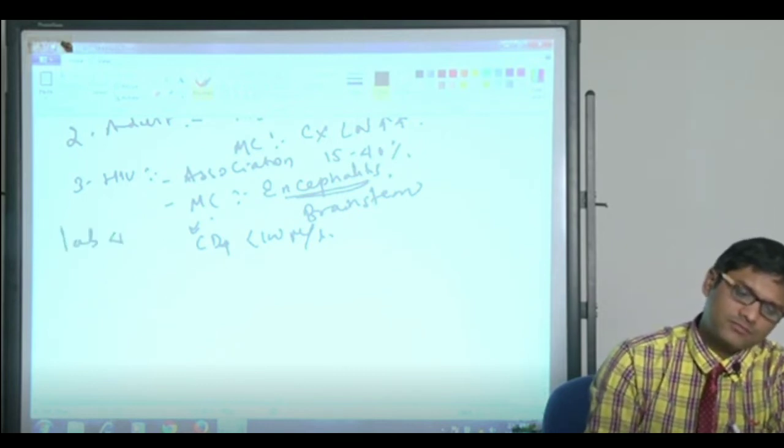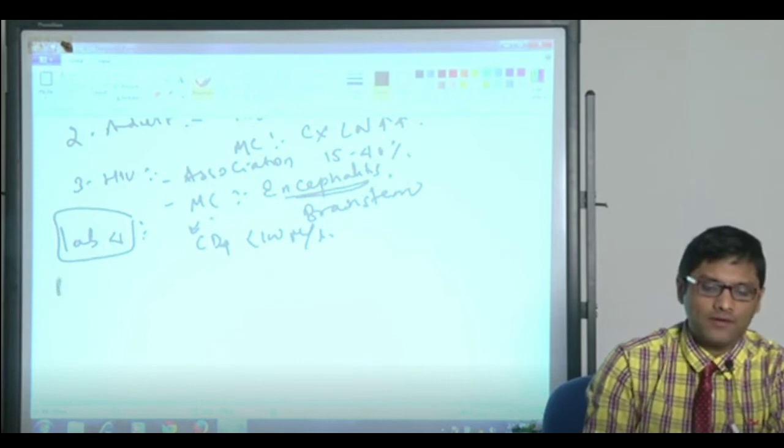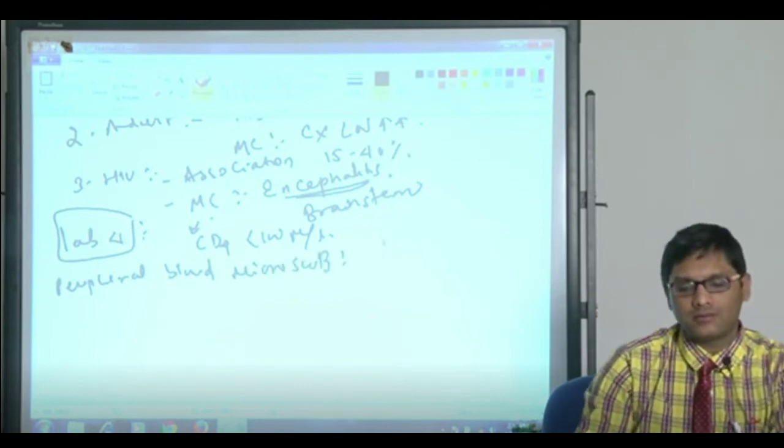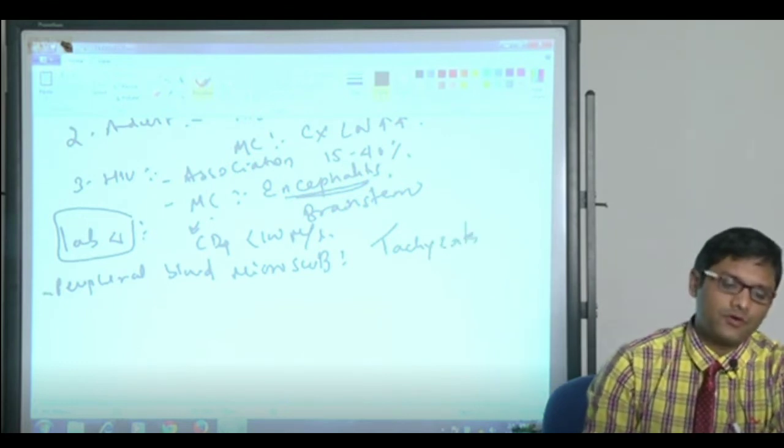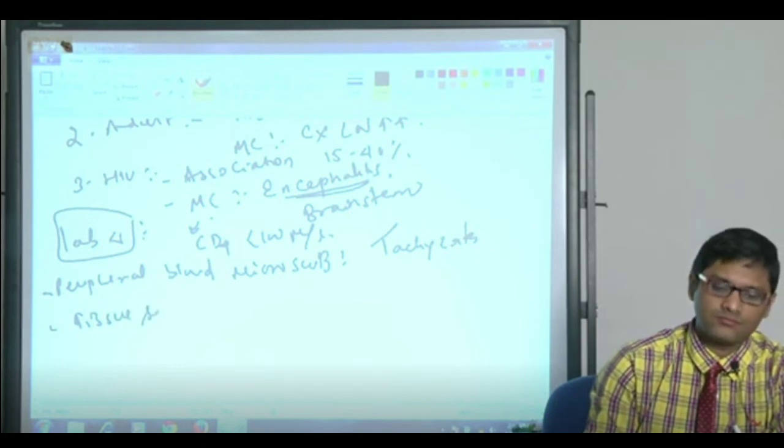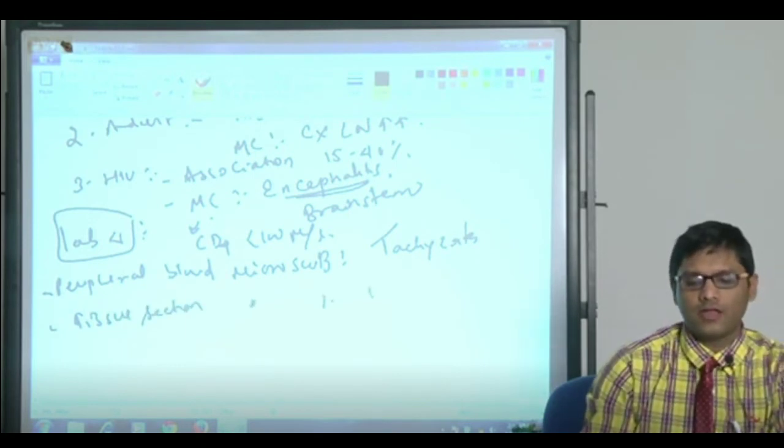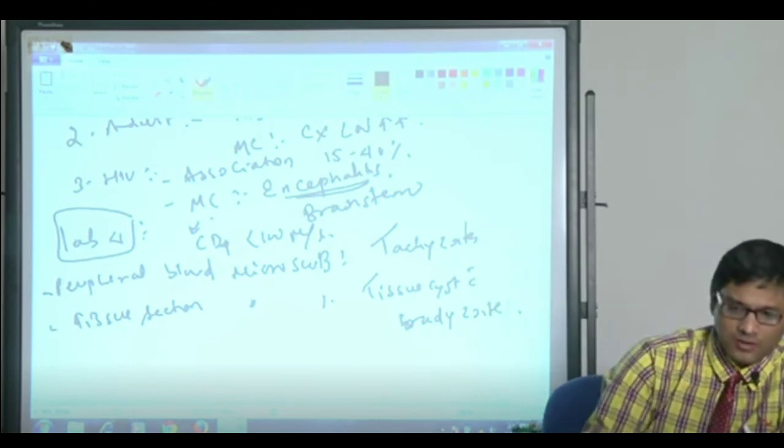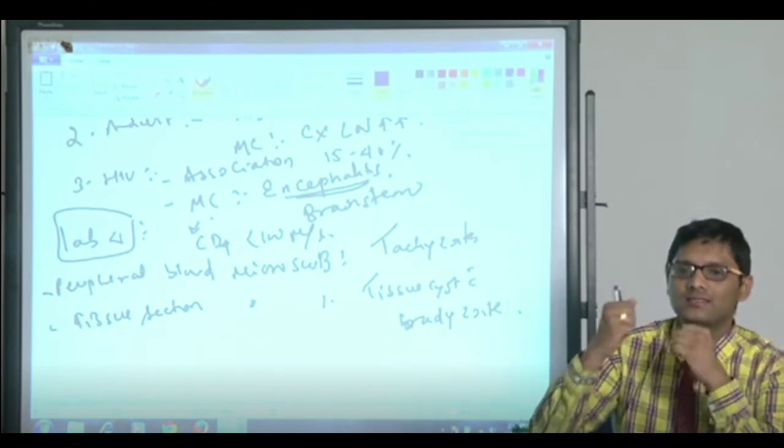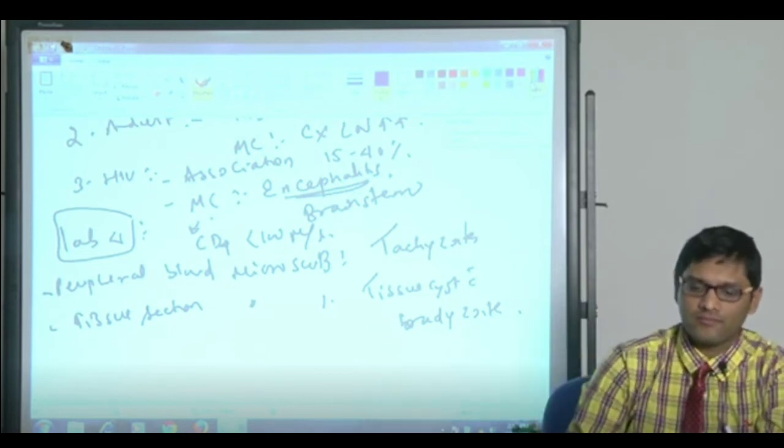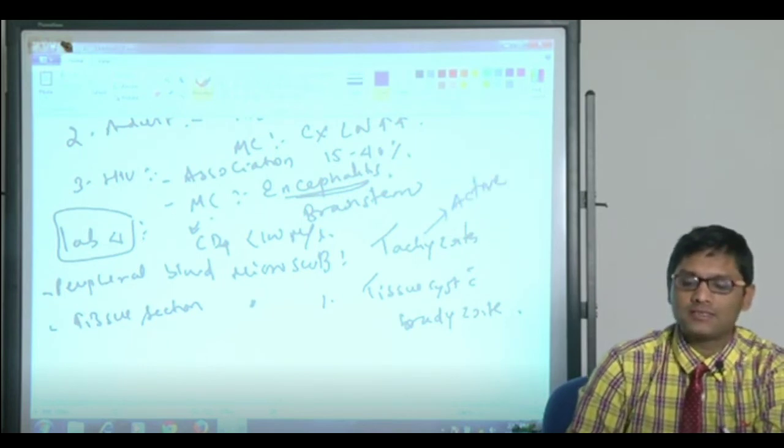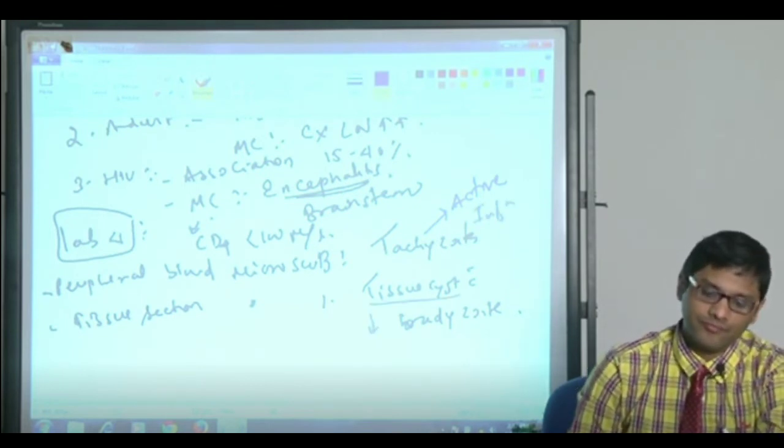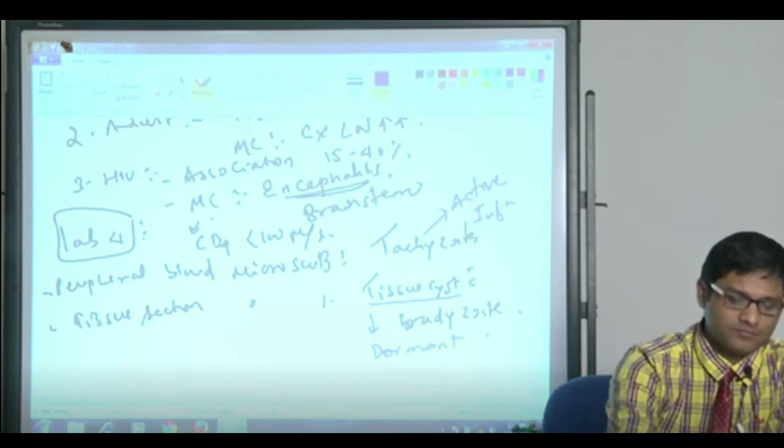Lab diagnosis: if you do a peripheral blood microscopy, then you may get tachyzoites. If you do tissue section microscopy, then you will get tissue cyst. Which is more important, which indicates active infection versus dormant? Tachy and brady, what is the difference? Tachy is active, brady is dormant. Tachyzoite presence is more important than tissue cyst.